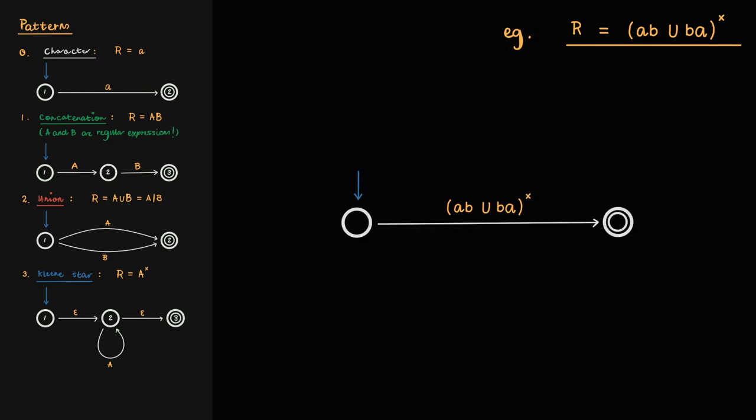As before, begin the construction of the NFA with a start state and an accept state, and label a transition between them with R.